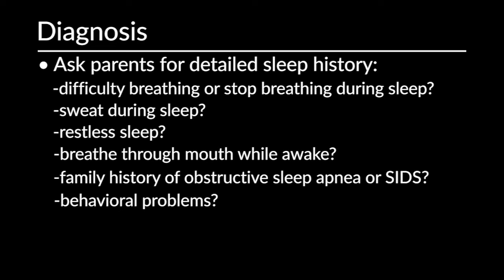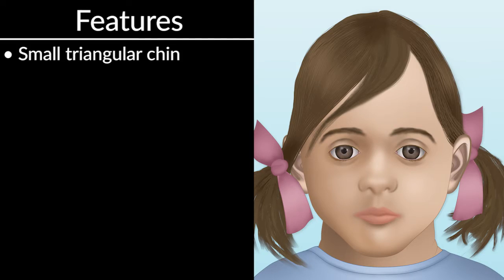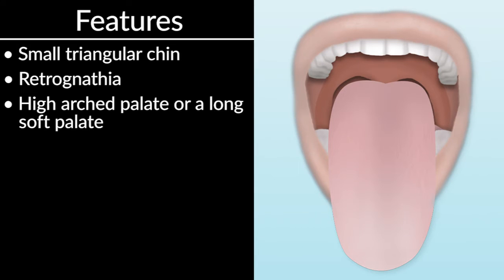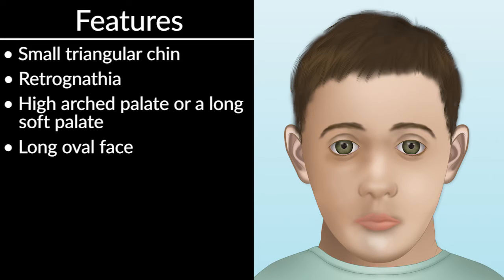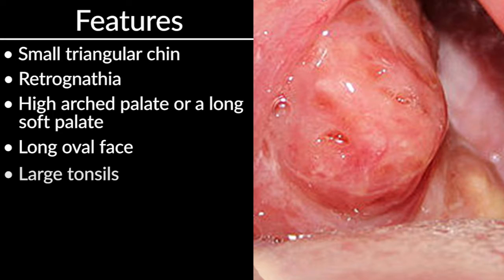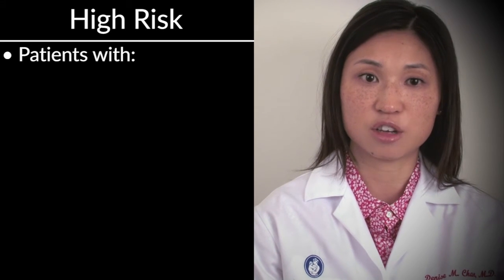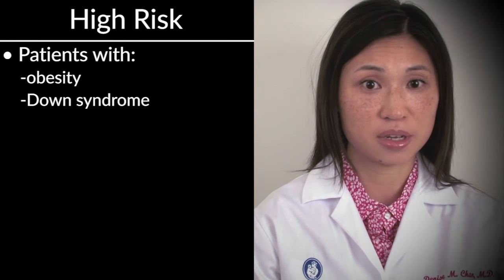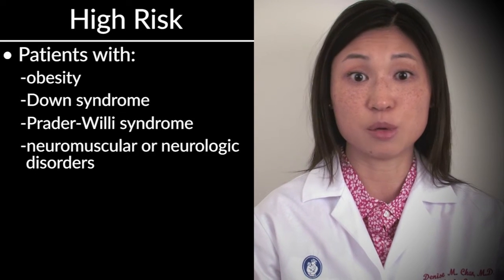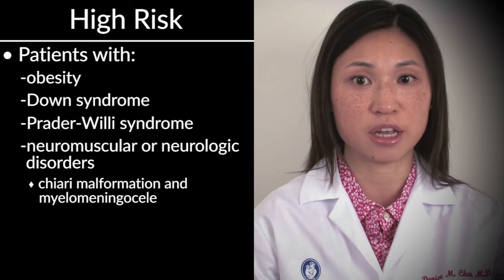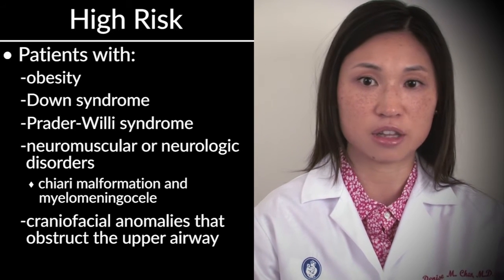Does your child have behavioral problems? When you examine the patient, you may notice certain features suggestive of obstructive sleep apnea, such as a small triangular chin, retrognathia, a high arched palate or a long soft palate, a long oval face, or of course large tonsils. There are also certain patients who are at high risk, including those with obesity, Down syndrome, Prader-Willi syndrome, certain neuromuscular disorders, neurologic disorders like Chiari malformation and myelomeningocele, or craniofacial anomalies that obstruct the upper airway.